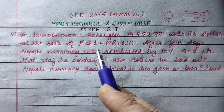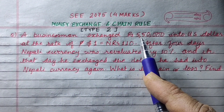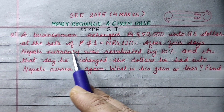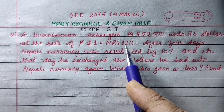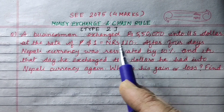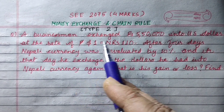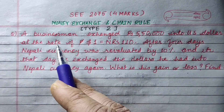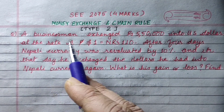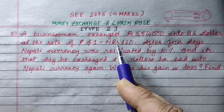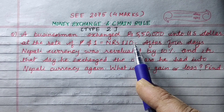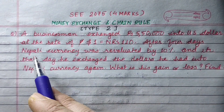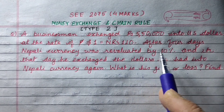A businessman exchanges rupees 5,50,000 into US dollars at the rate of 1 dollar equals to NRS 110. After 4 days, the Nepali currency was revalued by 10%.